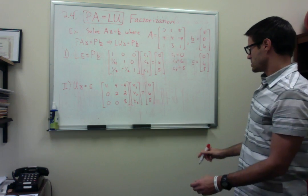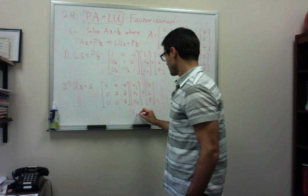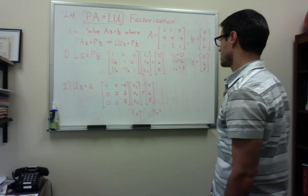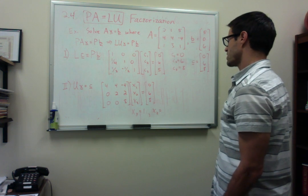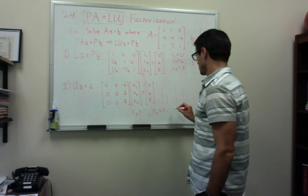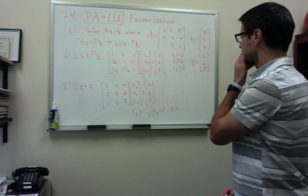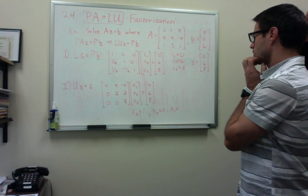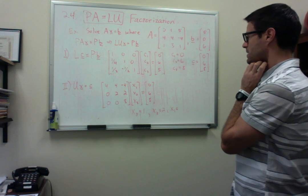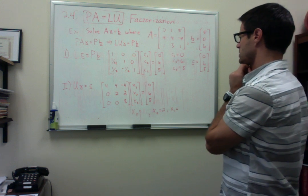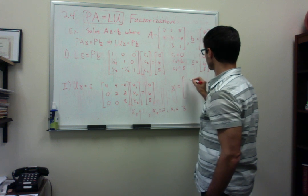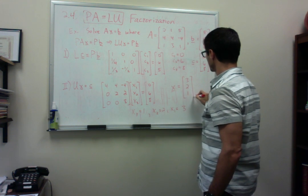And now we use back substitution to solve. So I can see here that x3 equals one. x2, let's see, what does x2 need to be? I'll be subtracting two from both sides. I get 2x2 equals four, x2 equals two. And then x1 equals... we get a four plus eight, that's 12. If I subtract 12 from both sides and then divide by minus four, it looks like x1 should be three. So our solution to this problem is the vector three, two, one.